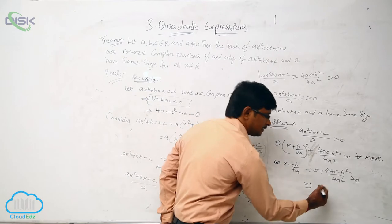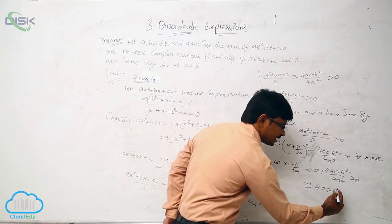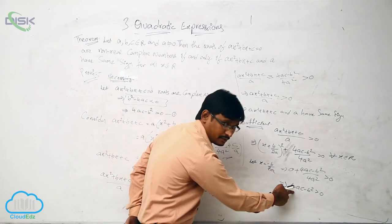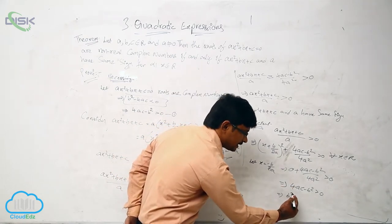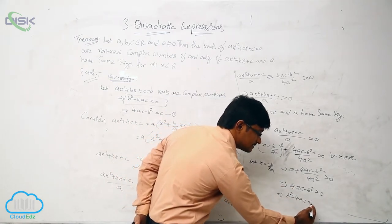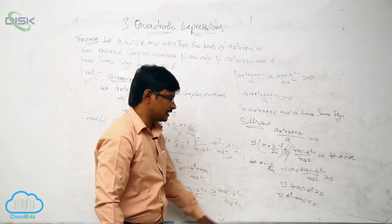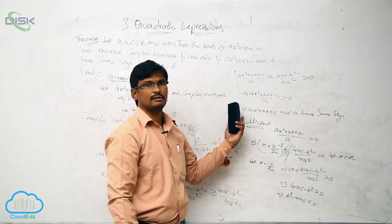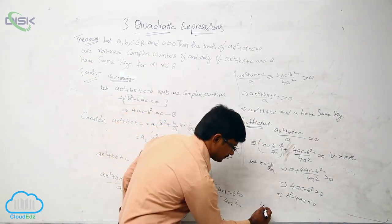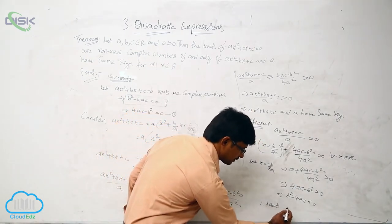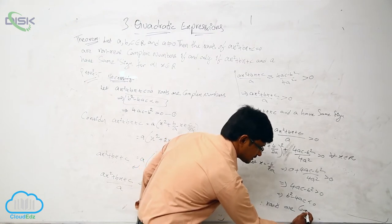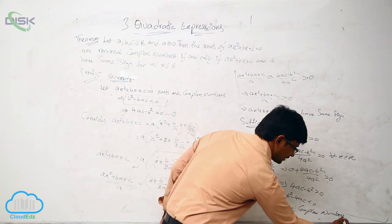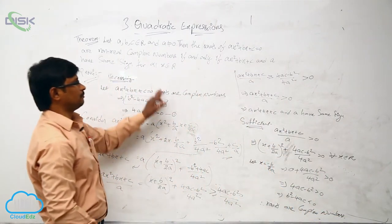If we cross-multiply, we get 4AC minus B squared greater than 0. Taking the negative sign common gives B squared minus 4AC less than 0. And we know that if B squared minus 4AC is less than 0, the roots are complex numbers. Therefore, the roots are complex numbers. This completes the proof.